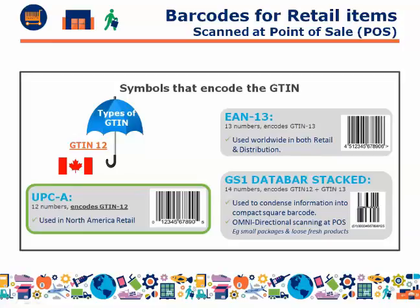For items that have smaller amounts of packaging — for example, cosmetics and gum — you could also use a UPCA for a GTIN-12; please contact GS1 Canada to learn more about this option. If your product has a GTIN-13 and is used globally, the barcode you would use is an EAN-13. If you want to condense your barcode into a smaller space on your packaging, you could use the GS1 data bar, which encodes both the GTIN-12 and the GTIN-13.